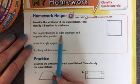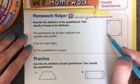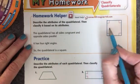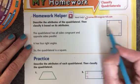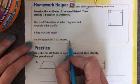we can see that the quadrilateral has all sides congruent. All of the sides are congruent and it has opposite sides that are parallel. It has four right angles, so it is a square.